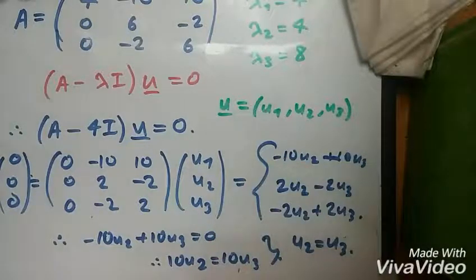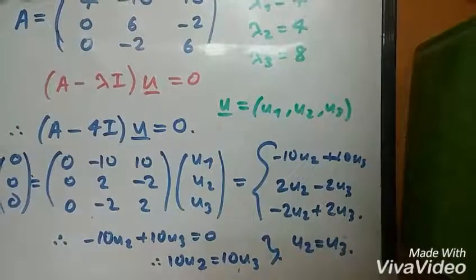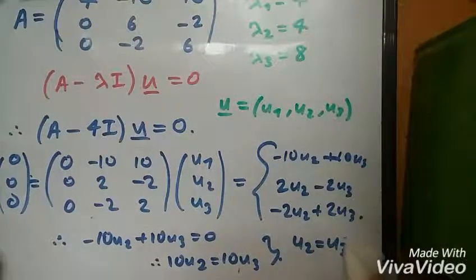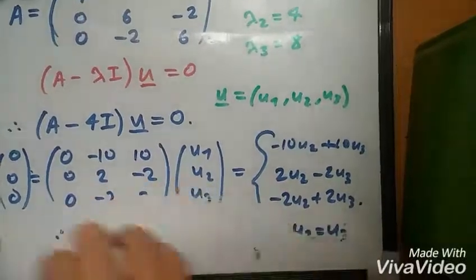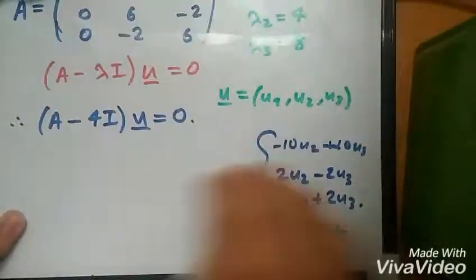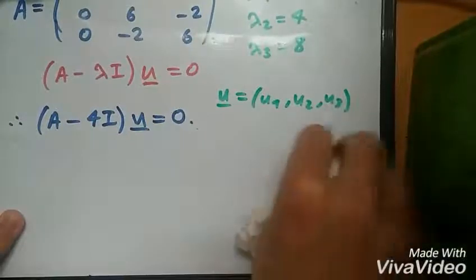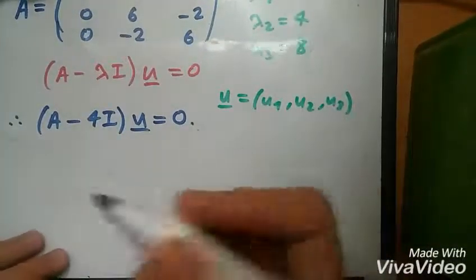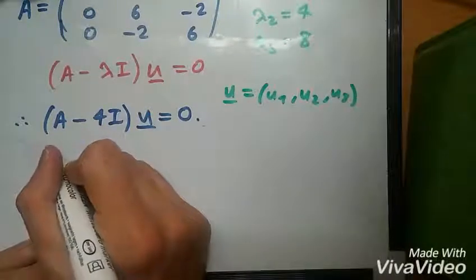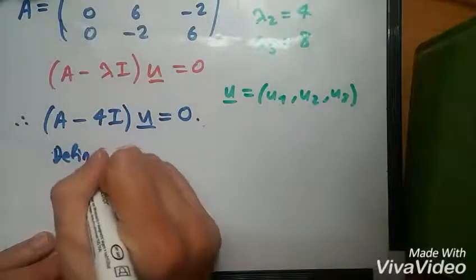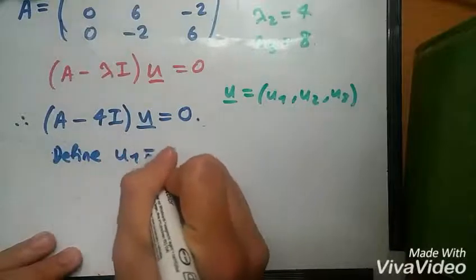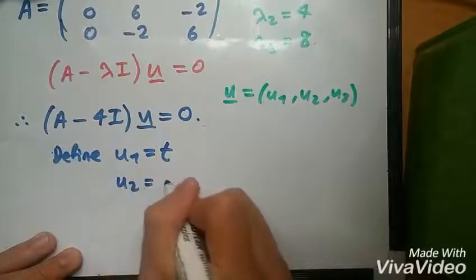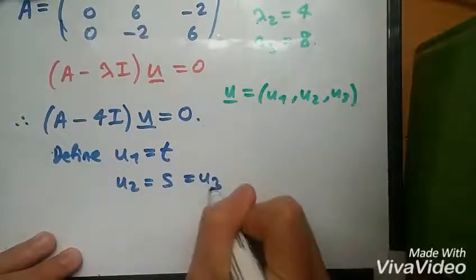So let's make it more clear. Let me just erase all this. We don't need this. So we said we can define u1 as, let's just call it t. And u2 we define as s, which of course also equals u3.